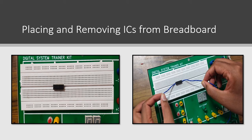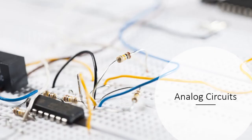When placing ICs on the breadboard, press them gently — do not press too hard as it will damage the pins, and do not leave them too loose as that will result in poor connections. When removing the IC after the experiment, do not pull it out with bare hands. Instead, insert a small wire through the gap provided in the breadboard and gently lever the IC out. Applying direct pressure while pulling out can damage the pins, so kindly follow this proper practice.